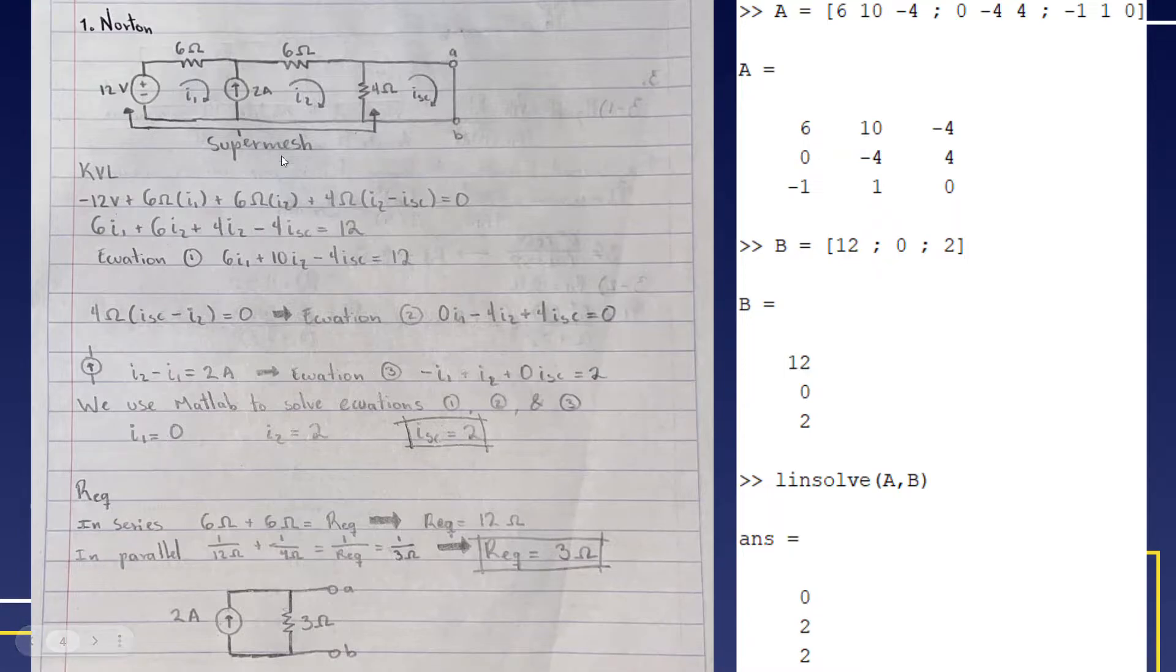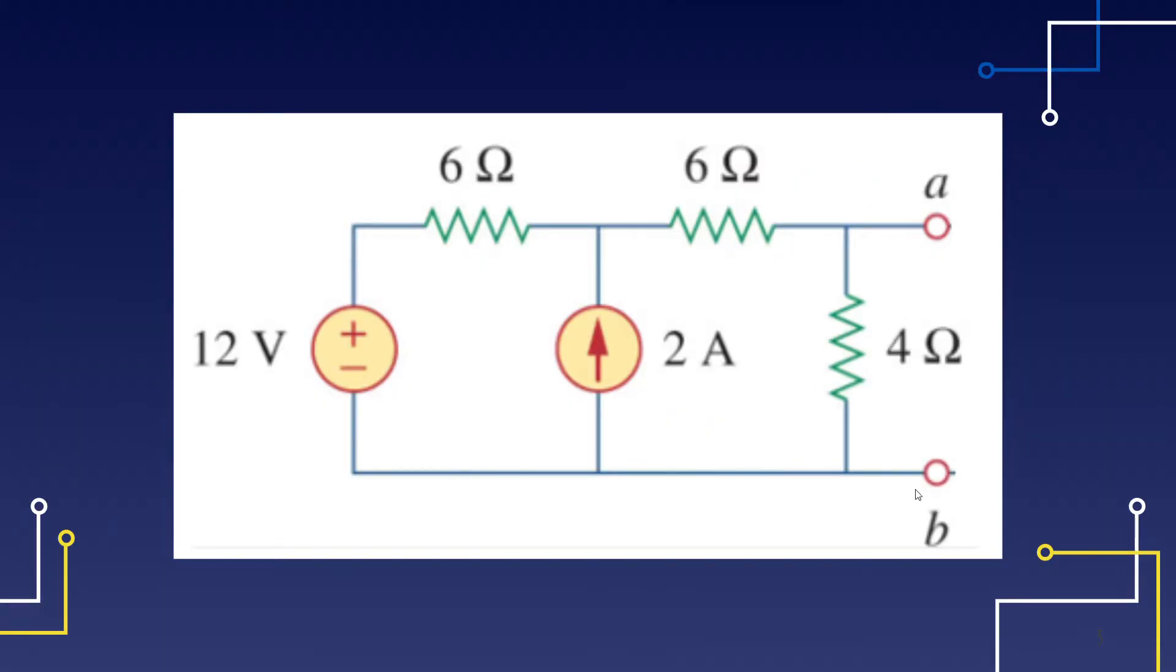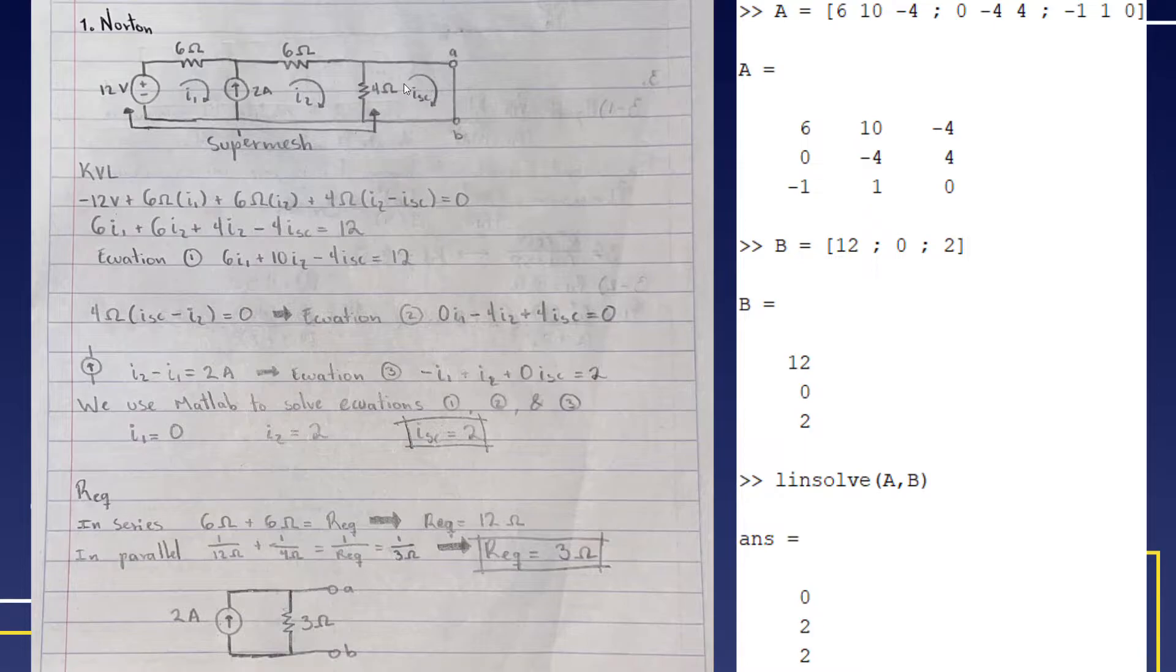These equations will be later solved and will give us the value of current in each mesh. Because it's a Norton circuit, we have to close the AB terminals that were previously open, and that will create a short circuit current that we're going to be using for our Norton equivalent circuit.